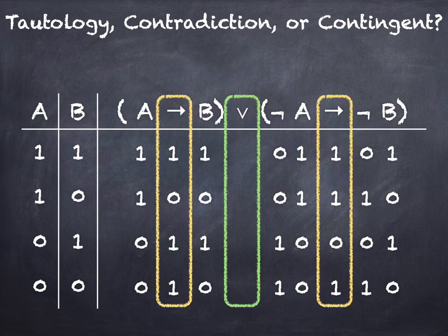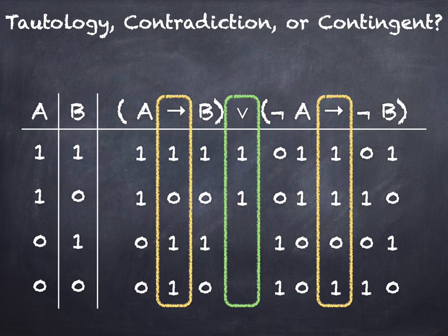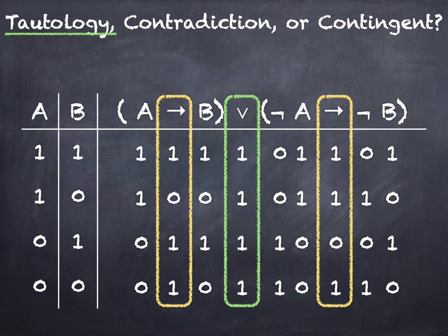Again, to get our main connective we have to compare the two sub-expressions — both conditionals again in this problem. We've got a 1 and a 1 — that's a 1. We've got a 0 and a 1 — also a 1. We're using disjunction here, not biconditional — keep that in mind. We've got a 1 and a 0 — also a 1 — and a 1 and a 1 — also a 1. The disjunction is true whenever either disjunct is true or both. So that's also going to be a tautology because it is true on every line.